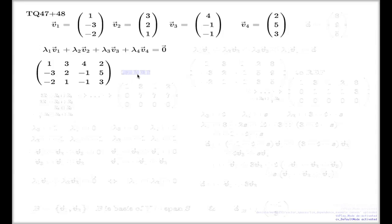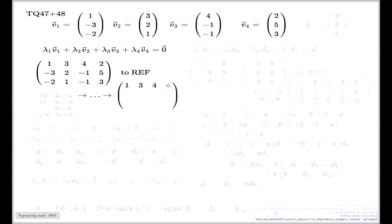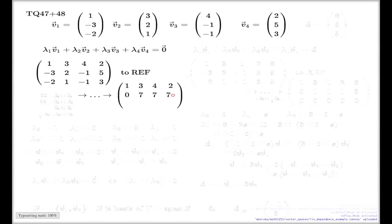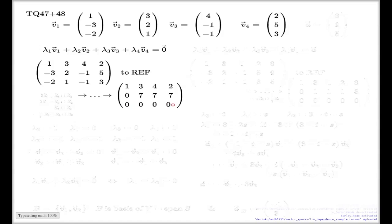I'll take this to row echelon form without showing all the details. Here is the row echelon form: row 1 is (1, 3, 4, 2), row 2 is (0, 7, 7, 7), and row 3 is (0, 0, 0, 0). If you want to double-check my computations, here is the set of row operations I applied.